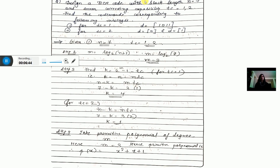The second numerical: design a BCH code with block length N = 7 and error correcting capability T_C = 1 and 2. Find the codewords corresponding to messages: for T_C = 1, D = 1011; for T_C = 2, D = 0 and D = 1. Step 1: N = 7, T_C = 1 and 2. Step 2: M = log base 2 of 8 = 3. Step 3: K = N - M·T_C. For T_C = 1: 7 - K = 3×1, so K = 4. For T_C = 2: K = 1.